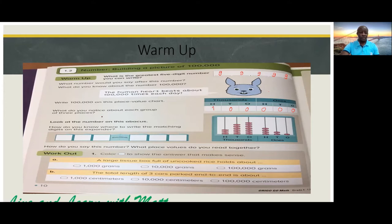What do you notice about each group of three places? We have the thousands and we have the ones.